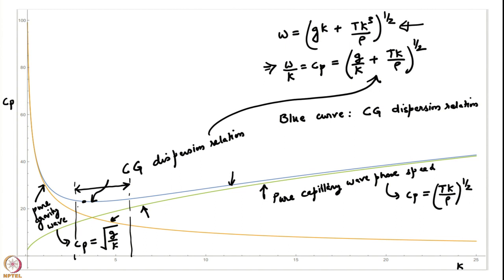In an intermediate regime, neither the green curve nor the orange curve represents the full dispersion relation accurately. In that region, one has to take into account the effect of both gravity and capillarity. Let us make a quick estimate of what wavelength requires the full treatment and what wavelengths allow us to ignore one of them.